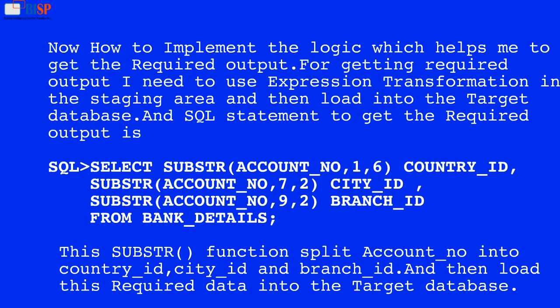Then load into the target database. The SQL statement to get the required output is: SELECT SUBSTRING(account_number, 1, 6) AS country_id, SUBSTRING(account_number, 7, 2) AS city_id, SUBSTRING(account_number, 9, 2) AS branch_id FROM bank_details. This substring function splits the account number into country ID, city ID, and branch ID.